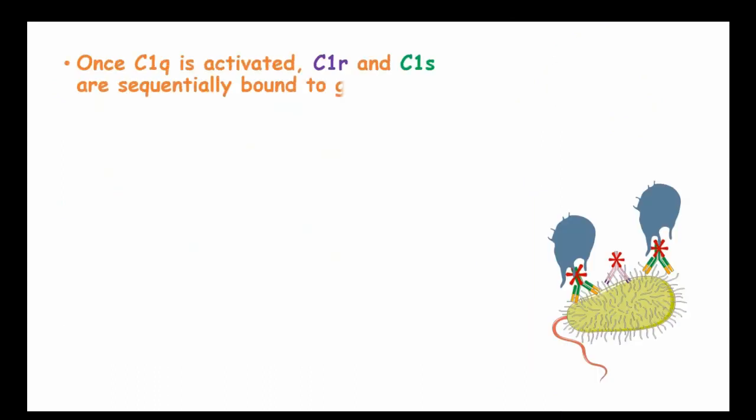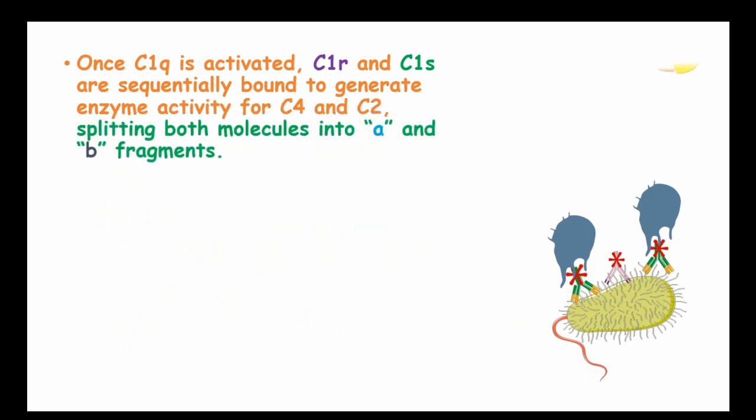Once C1Q is activated, C1R and C1S are sequentially bound to generate enzyme activity for the next complex C4 and C2 components, splitting these components into two molecules, the A portion and B fragments. The A portion is the smaller part and B is the bigger part.